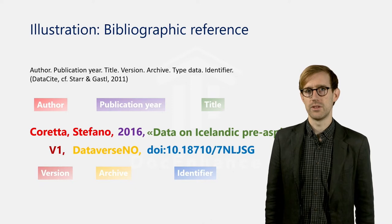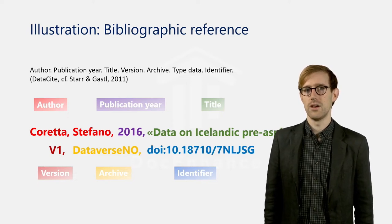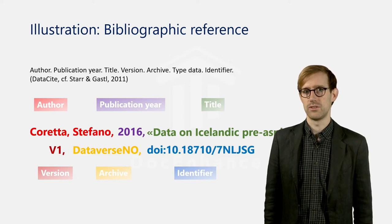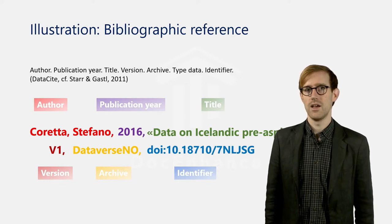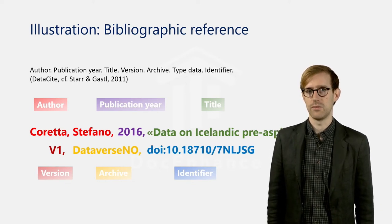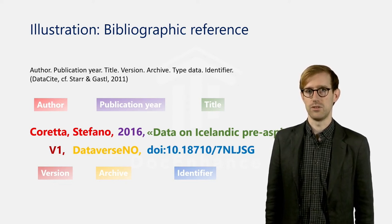When we break down the components of a bibliographic reference for a data set, it is only a few components — the version and the name of the archive — that reveal this is not a citation of a published resource. When citing a data set, it is crucial to include the persistent identifier, for example the handle or the DOI, since the data set can only be accessed online. A few components in the reference are only used in data citations, including the name of the data archive where the data set can be found and which version of the data set has been used.